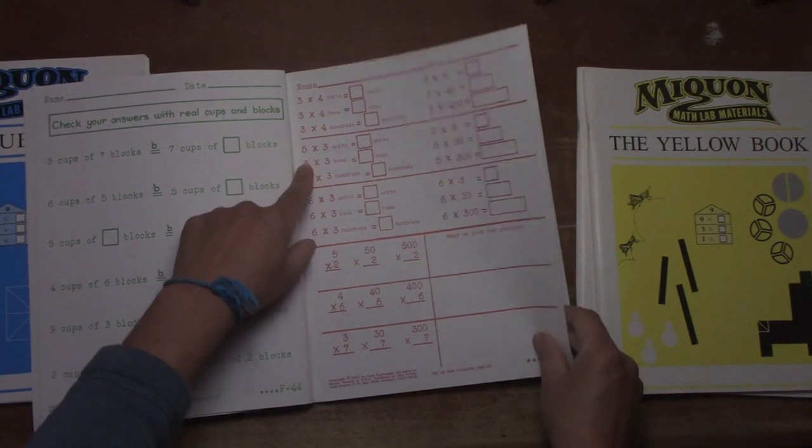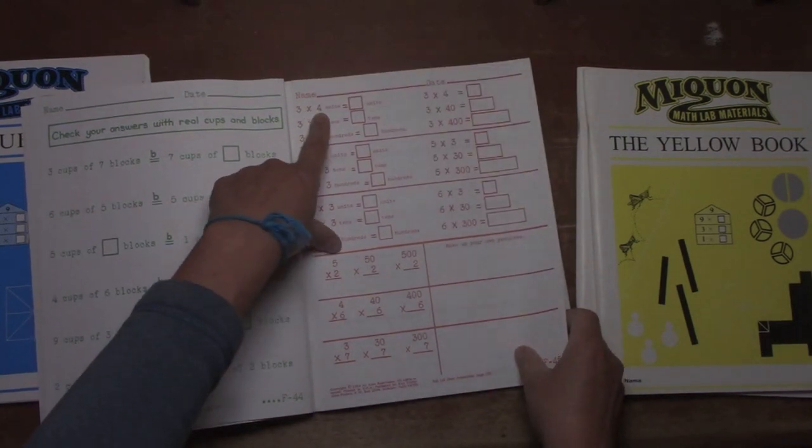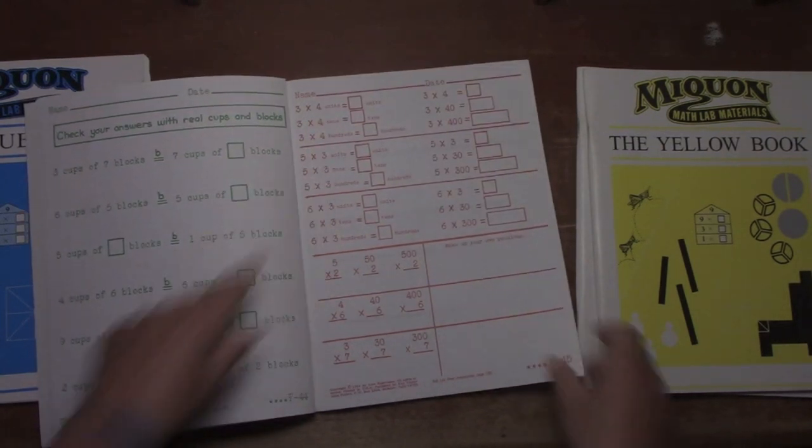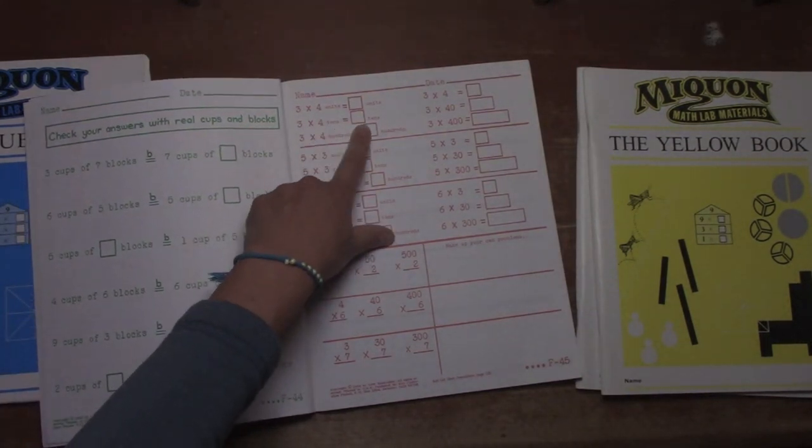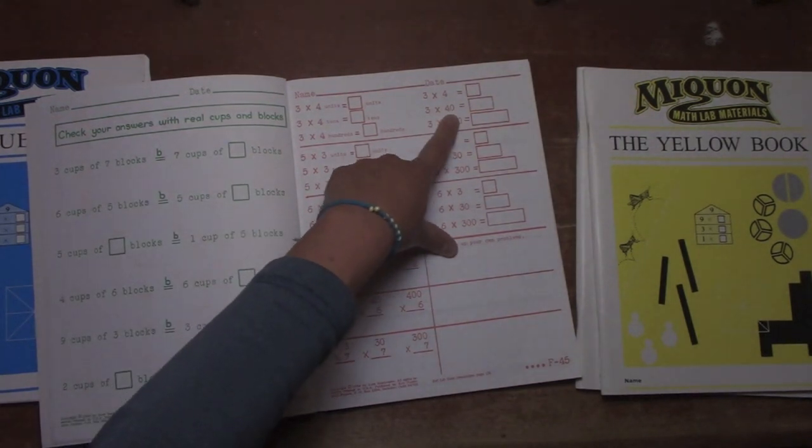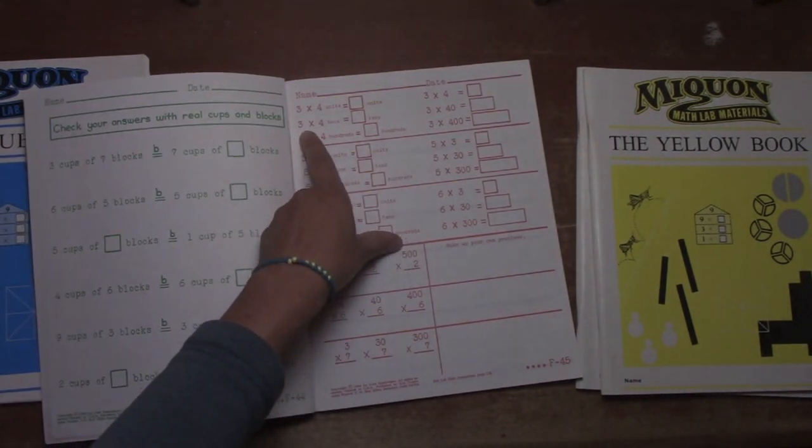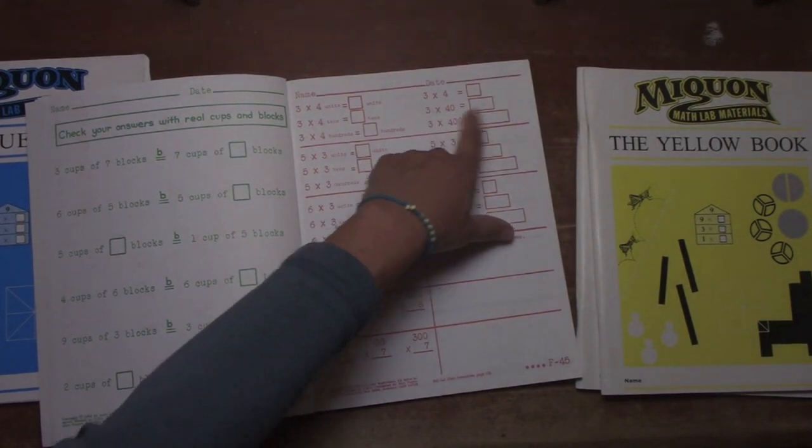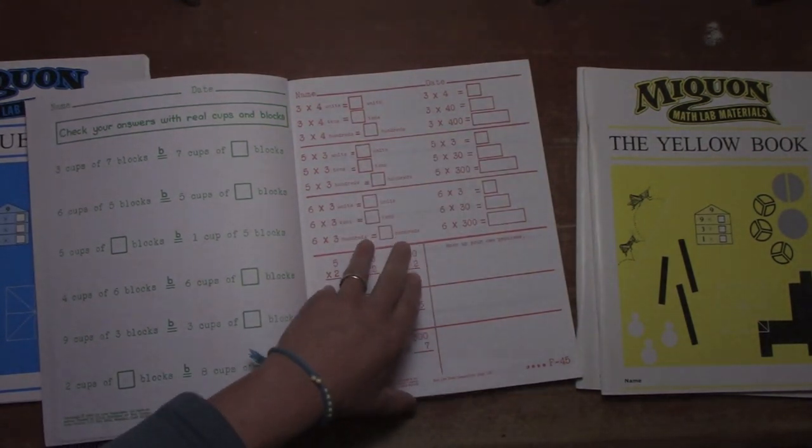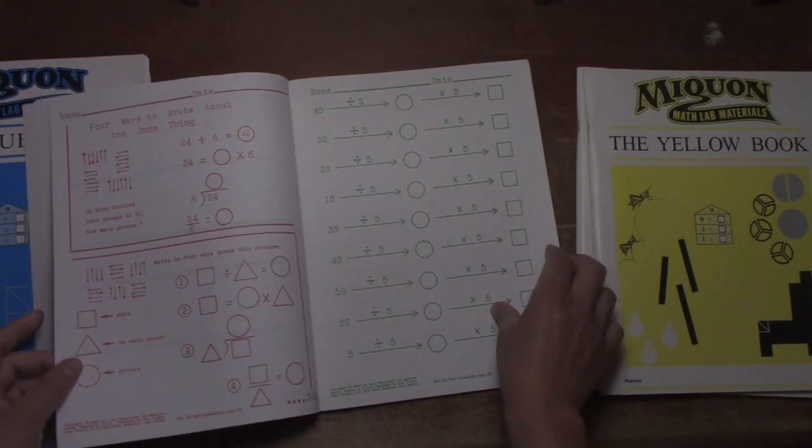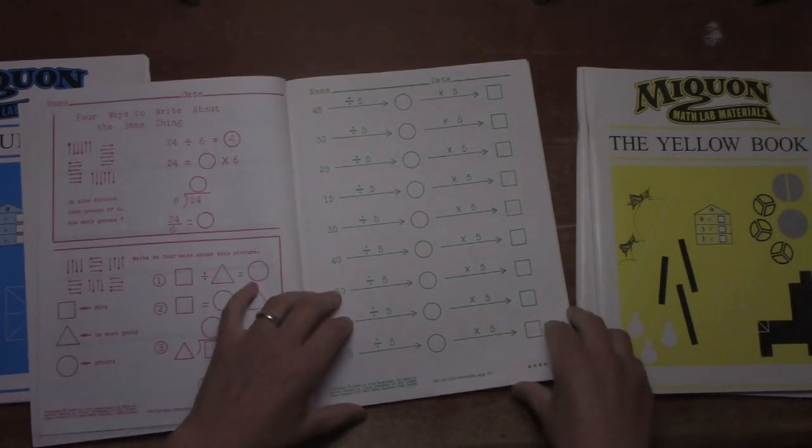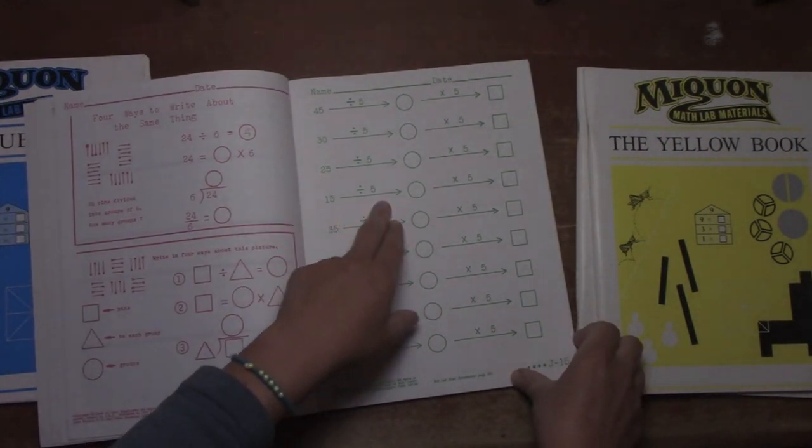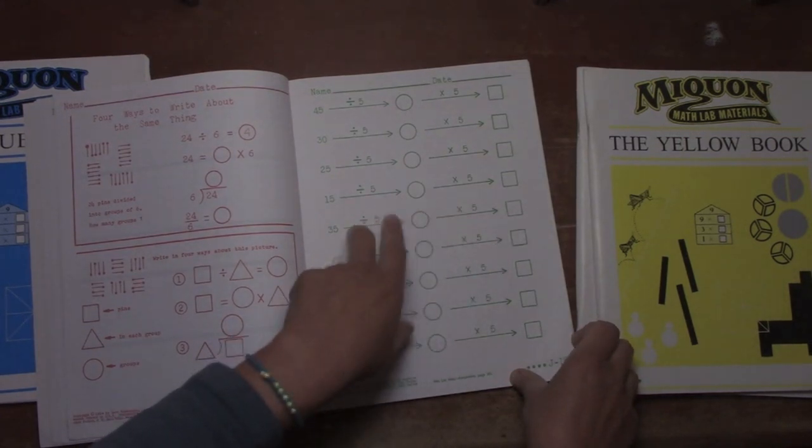So they're getting into multiplying and they learn things like three times four units or ones is often what we'd call it is 12 units, right? 12 ones. But three times four tens is going to be 12 tens, which also looks like this mathematically. So that we would say three times four tens is the same as three times 40, which is 120 or 12 tens. So you see they teach some of that. The emphasis on place value is really good in this book. And that's really important. I cannot emphasize enough how important place value is.